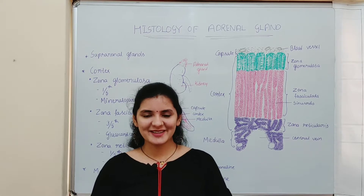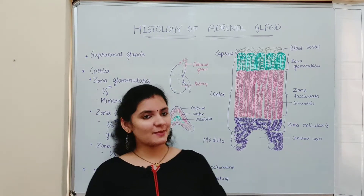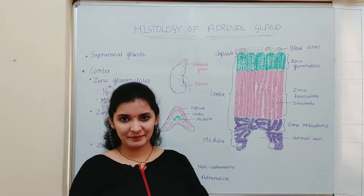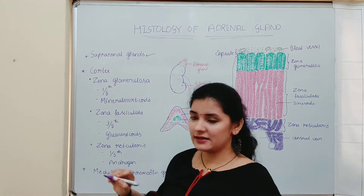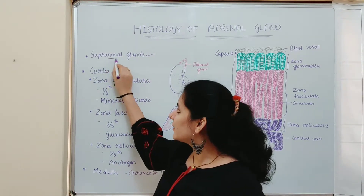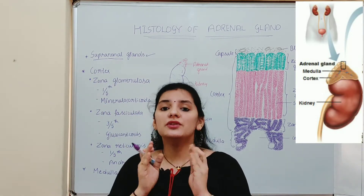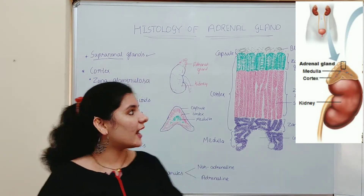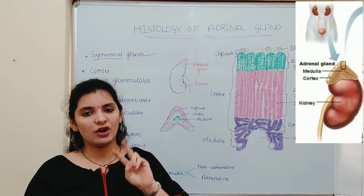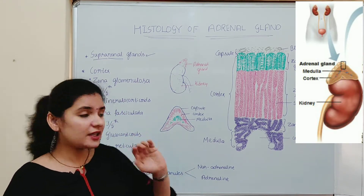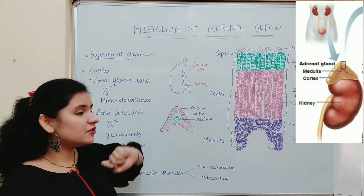Hi everyone, welcome back to my channel. Today we'll discuss the histology of the adrenal gland. The adrenal gland is also called the suprarenal gland — 'renal' refers to kidney and 'supra' means above, so the suprarenal gland is present above the kidney. We have paired kidneys, and on each kidney these adrenal glands are situated.